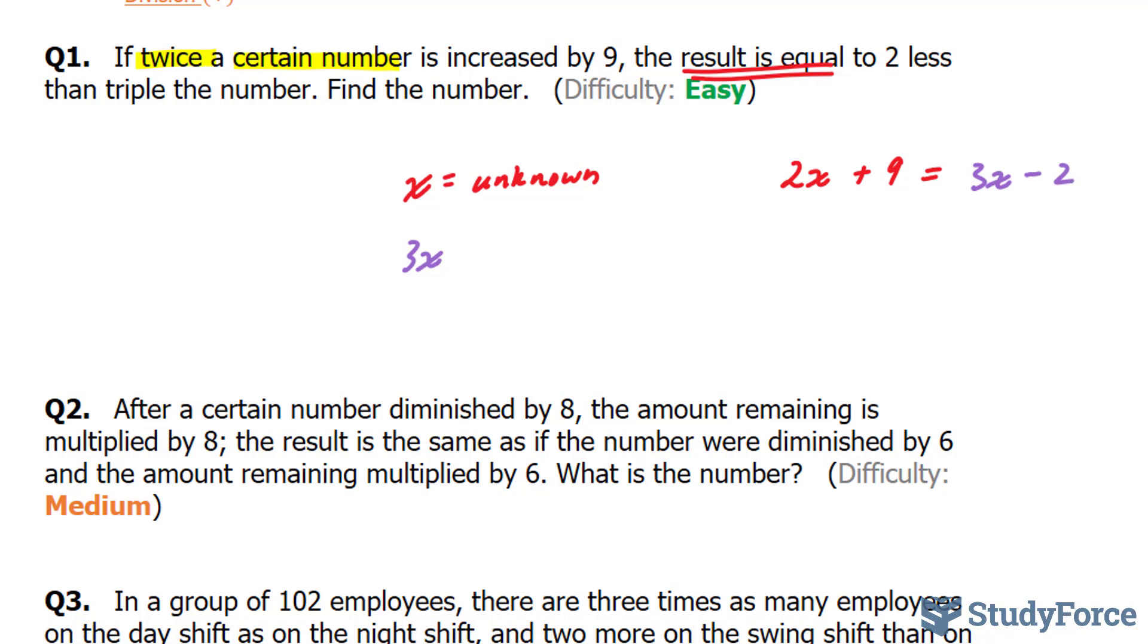Now we have to find the number. To solve for this, we have to collect like terms. We'll take the numbered terms and the letter terms to their own unique side. So I'll take this over, and I end up with 2x minus 3x is equal to negative two. That stays the way it is. I'm going to bring this positive nine over. That makes it negative nine.